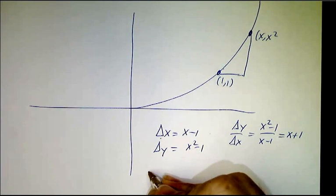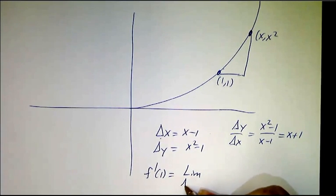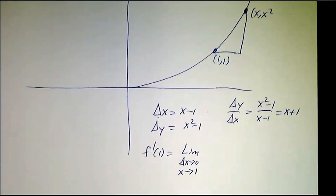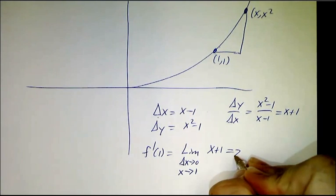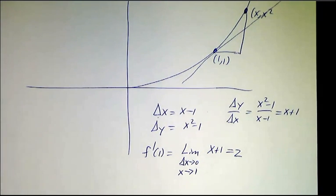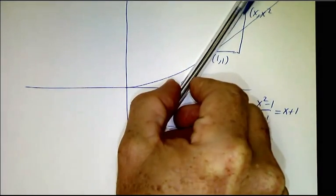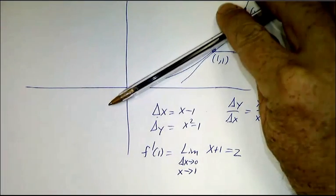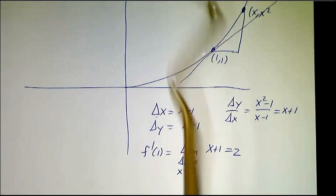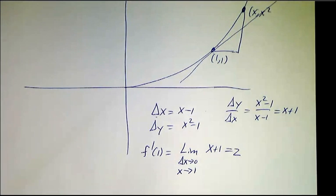The slope of the tangent line, which we call f'(1), is the limit as delta x approaches 0. In other words, the limit as x gets closer and closer and closer to 1 of x plus 1. And that's 2. So the slope of the tangent line here is 2. For any value of x that's bigger than – if I take the secant line, it'll have a slope bigger than 2. If I take this secant line, it'll have a slope less than 2. But the tangent line has a slope exactly 2, which we get by taking a limit of the secant lines as they get closer and closer and closer to the tangent line.